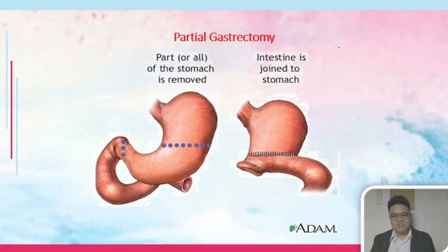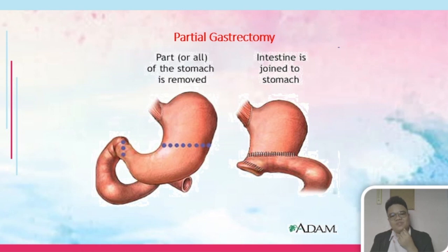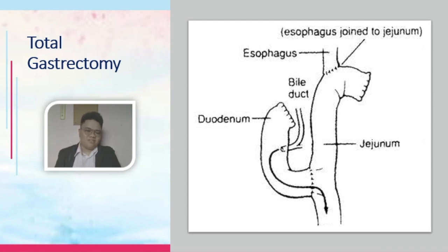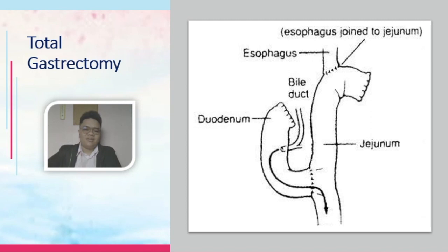In partial gastrectomy, part of the stomach is removed and the intestine is joined to the stomach. In total gastrectomy, the entire stomach is removed because it may no longer be functional or bleeding may not be adequately controlled, necessitating removal of the entire stomach.